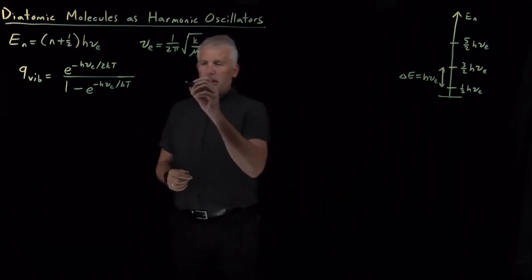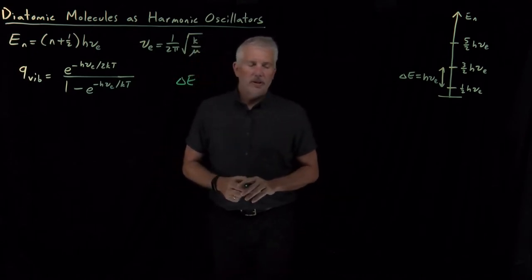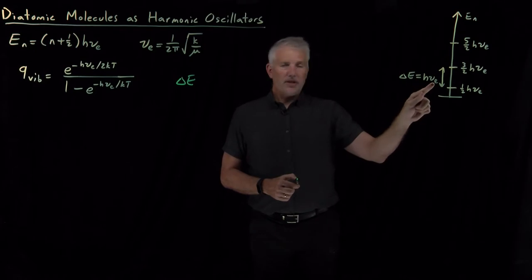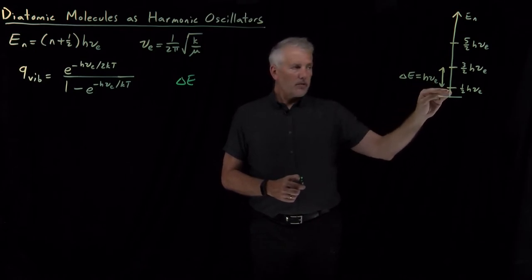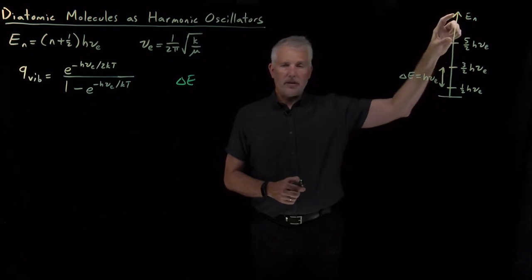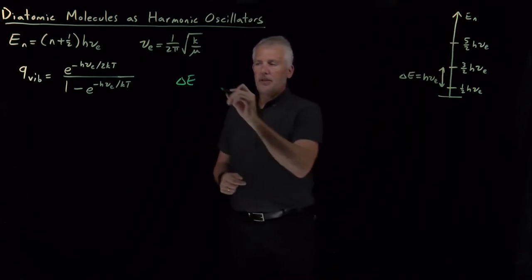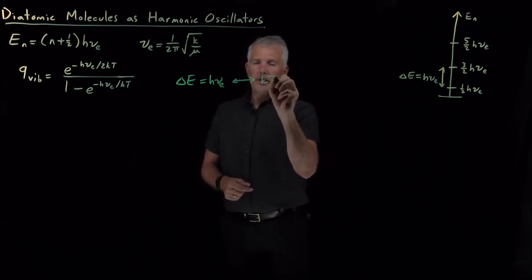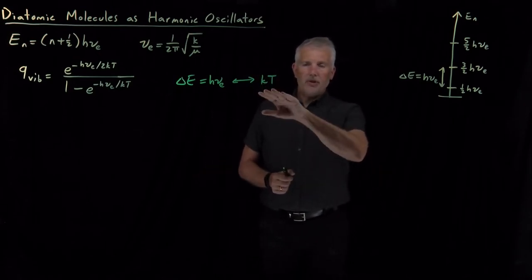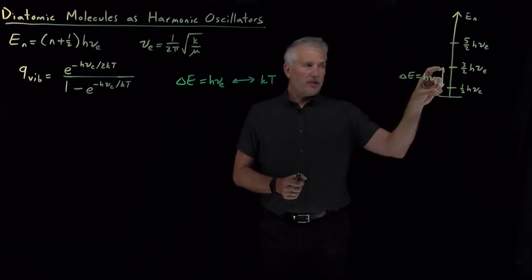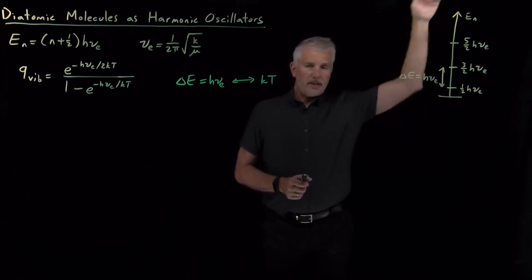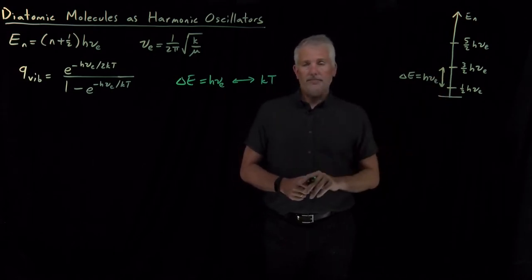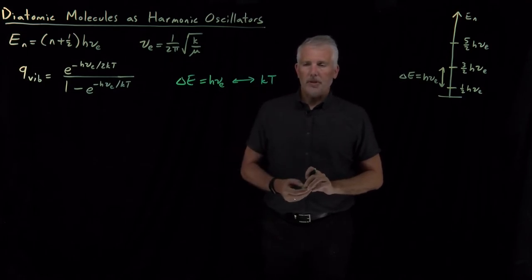The real question is going to be how the difference in energy between harmonic oscillator states compares to kT. Remember, every pair of successive states is separated by the same amount of energy — h times the vibrational frequency — regardless of whether it's the 0th to 1st, 1st to 2nd, or 2nd to 3rd. If kT is large compared to that energy difference, thermal energy is enough to excite many energy levels. If kT is small compared to that difference, we're stuck down in the ground state.